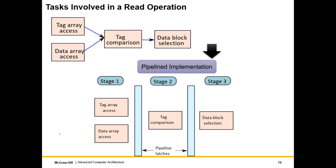Let us look at a simple idea of how to pipeline by examining the tasks involved in a read operation. In a read operation we have a parallel tag and data array access. This is a beneficial design choice — we waste a little power but we get all k data blocks in a k-way set-associative cache in the same cycle. Once we know which tag matches, we choose the appropriate data block. Let's call this stage one. Stage two is when we compare the tags.